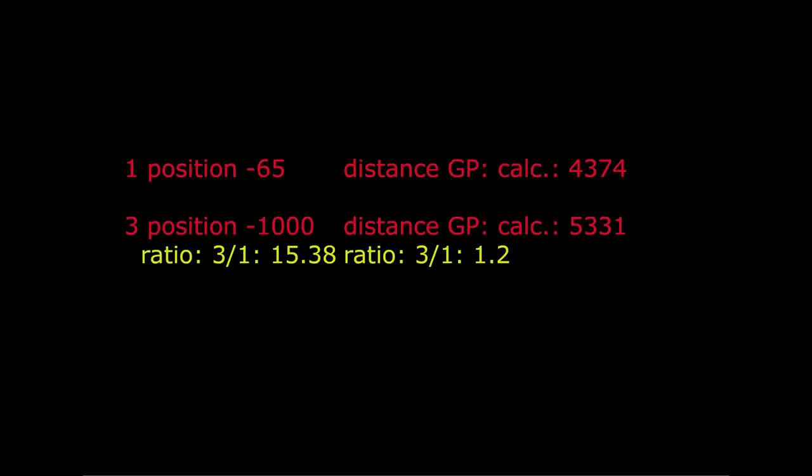The ratio between the third distance of minus 1000 and the first one of minus 65 equals 15.38, although the ratio between the calculated distance equals 1.2. This time, he is a factor of almost 13 wrong.